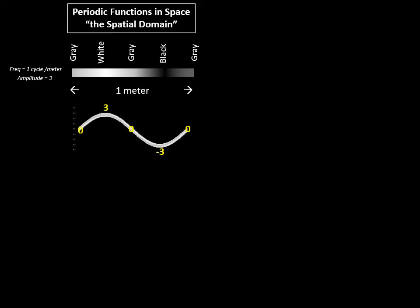And we could represent it as a wave over a distance of one meter where the amplitude of the wave varies from zero representing gray up to three representing white back to zero representing gray minus three representing black and back to zero representing gray.